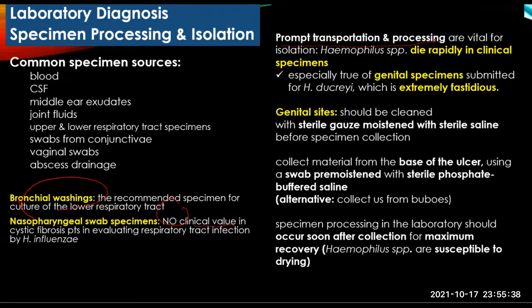This is especially true for genital specimens submitted for H. ducreyi, which is extremely fastidious. Genital sites should first be cleaned with sterile gauze moistened with sterile saline before specimens are collected. A swab should be used to collect material from the base of the ulcer, or pus can be aspirated from buboes if present. Direct plating on selective media at the bedside is preferred instead of using transport media because Haemophilus species are susceptible to drying.